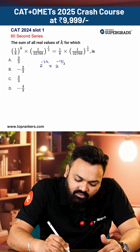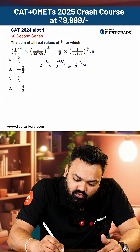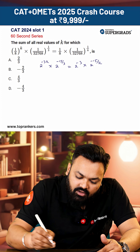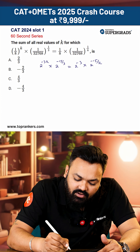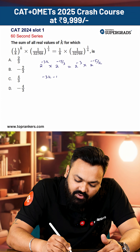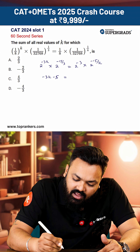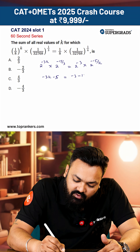Minus 15 divided by 3 is equal to 2 to the power minus 3. And this is 2 to the power minus 15 upon k. Since the base is the same, we equate the powers: minus 3k minus 15 upon 3 equals minus 5, and this equals minus 3 and minus 15 upon k.